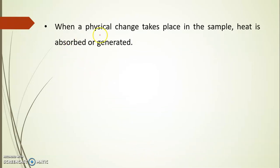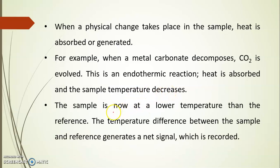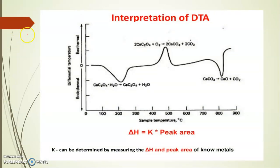When a physical change takes place in the sample, heat is absorbed or generated. For example, when a metal carbonate decomposes, carbon dioxide is evolved. This is an endothermic reaction. Heat is absorbed and the sample temperature is decreased. The sample is now at a lower temperature than the reference. The temperature difference between the sample and reference generates a net signal which is to be recorded. This is the example for the DTA curve or interpretation of DTA. Here you can see there is differential temperature and temperature which is provided as heat.